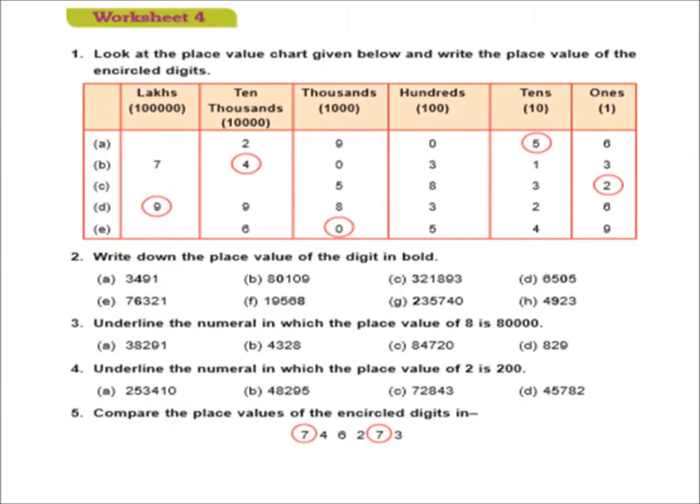Students, I think all of you have understood about the place value. Now, here, worksheet 4 is given here. Worksheet 4, page number 9 and 5 questions are here: 1, 2, 3, 4, 5. I think you can solve it yourself. In question number 1, digits are encircled here and you have to find out the place value. You can do it yourself. Do question number 1, 2, 3, 4, 5 in your classwork. If there is query, ask to me. I will solve it.